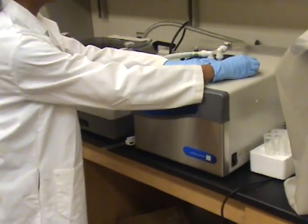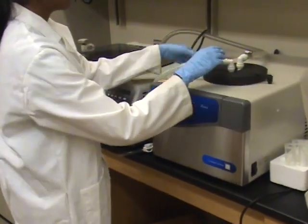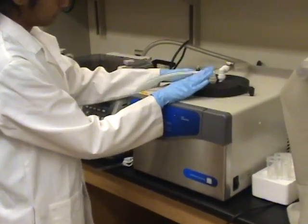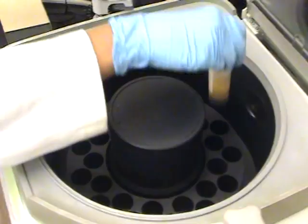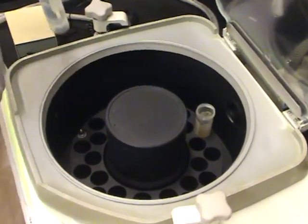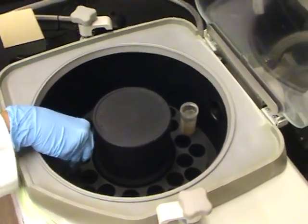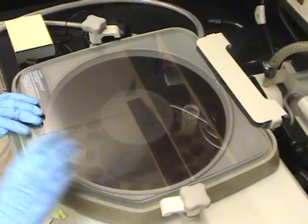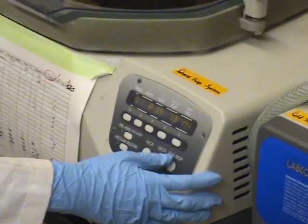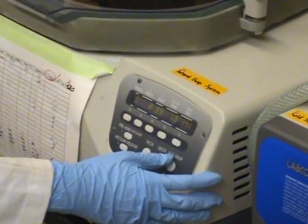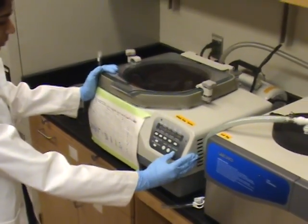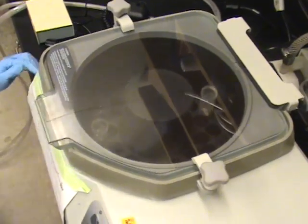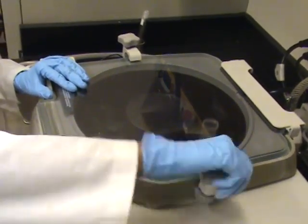Next, turn on the cold trap and build up a vacuum. Load the solvent evaporation system with the tubes, making sure the caps are removed. Close and tighten the lid. Set the appropriate speed, temperature, time, and vacuum pressure. Then, turn the machine on. This machine allows the vacuum to suck out all of the hexane and leave just the lipids.